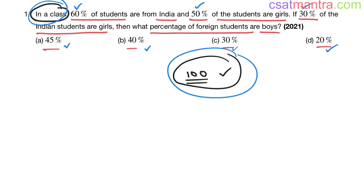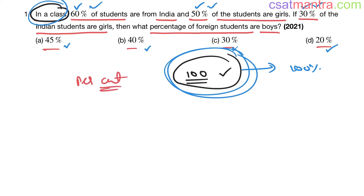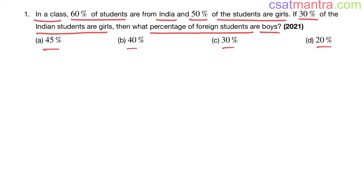The problem should be entirely in percentages — in that case you can assume any value. Taking the number of students as 100 means it's 100%. This is the thumb rule: if you see everything as percentages in a problem, you can take the total as 100. You may take 200 or 300, but 100 simplifies things. 'Percent' comes from 'centum' meaning century — 100 — which is why taking 100 makes things easier.